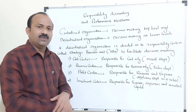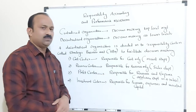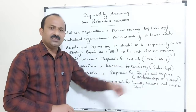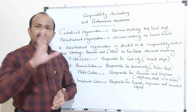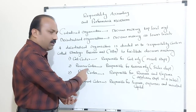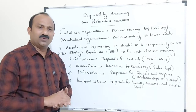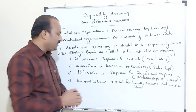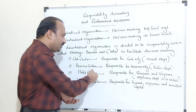Number two, Revenue Center. A revenue center is always responsible for revenue only. For example, the sales department — their main aim is to make revenue for the organization. An organization's success will always depend upon the revenue department or the revenue center.